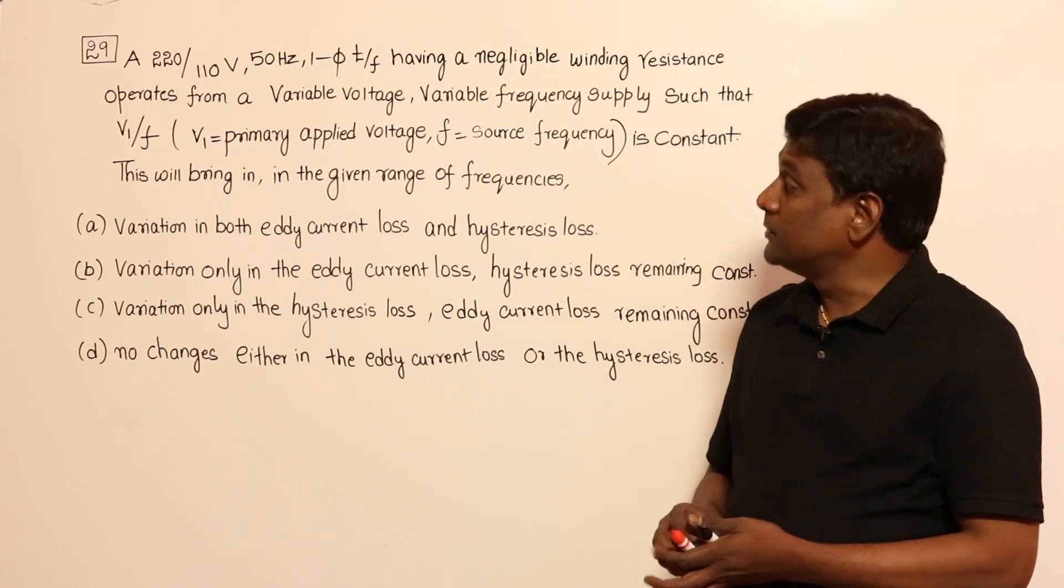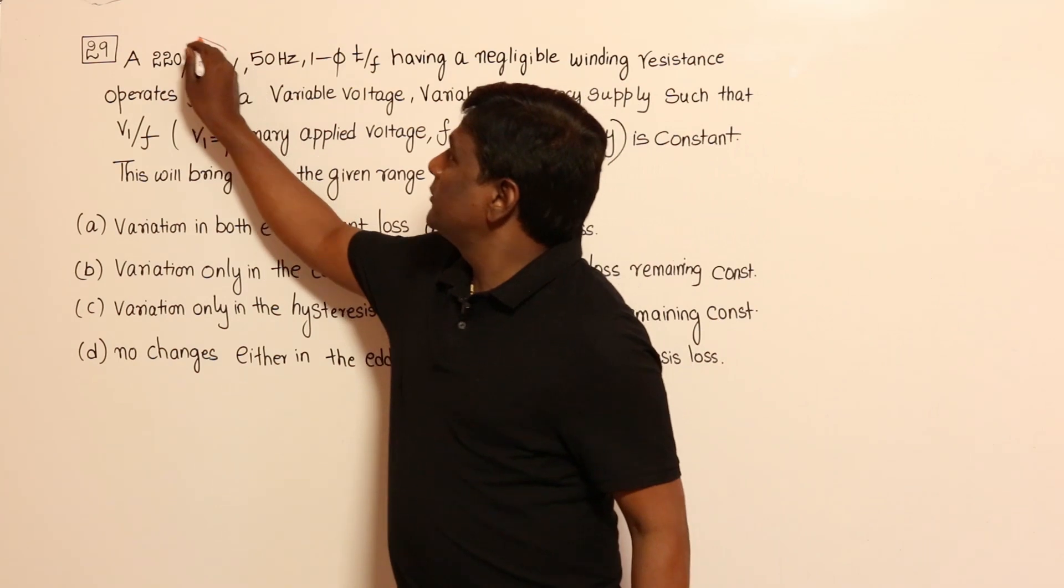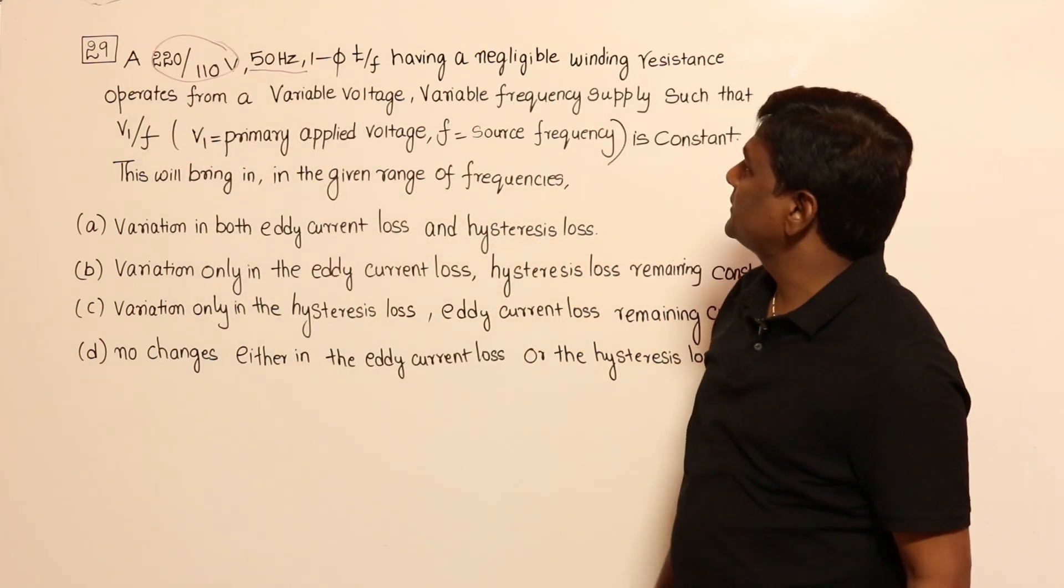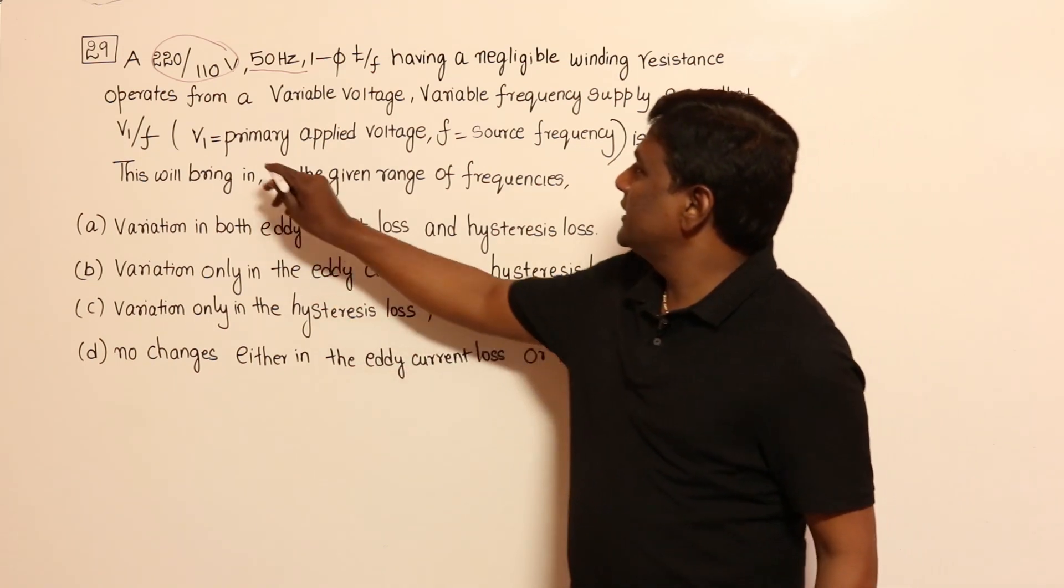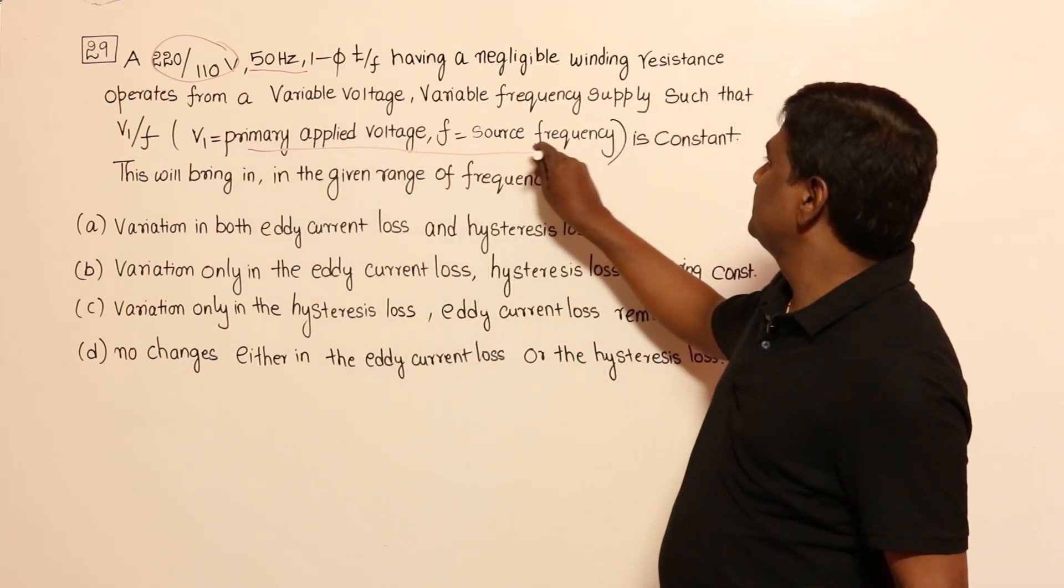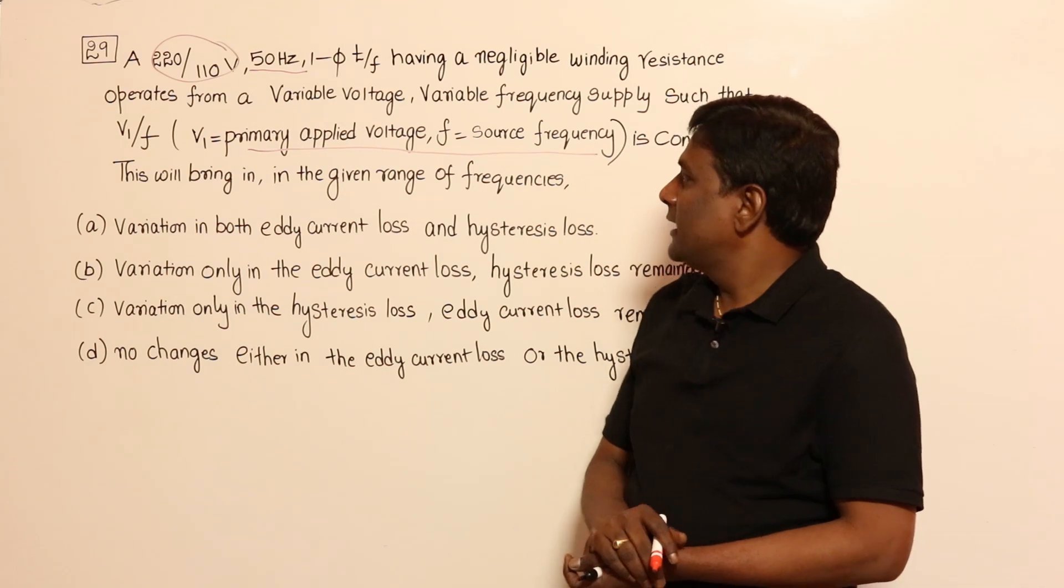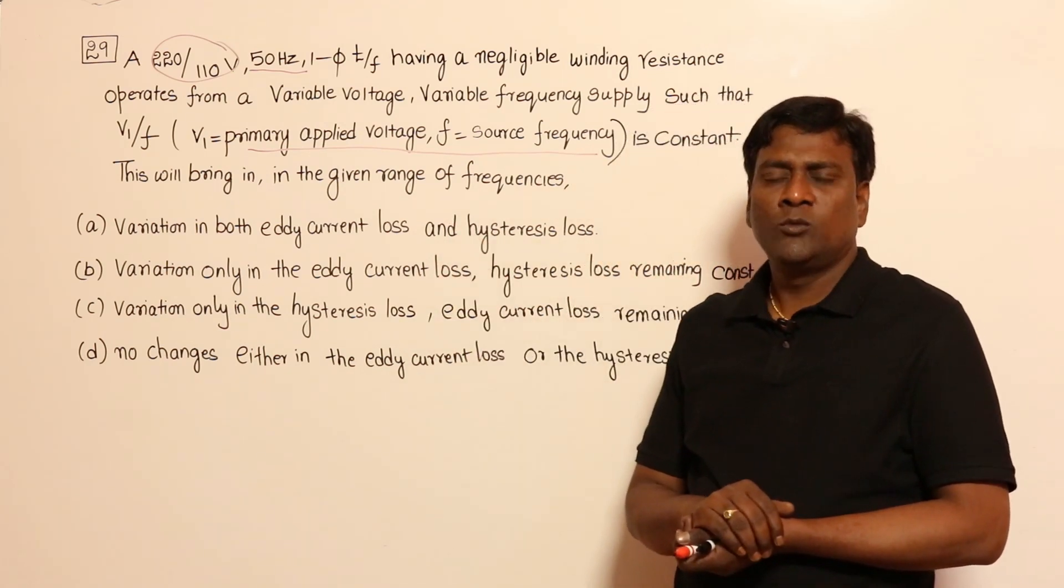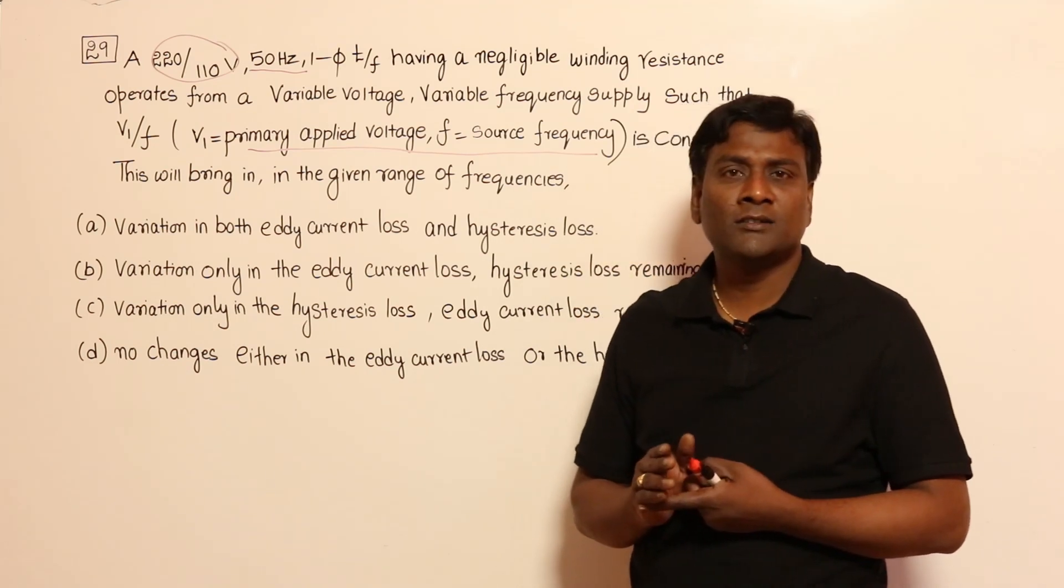In this old IAS problem, a 220 volts by 110 volts, 50 Hz transformer, single phase, having variable voltage, variable frequency supply will operate in the given range of frequencies. We know that eddy current loss...